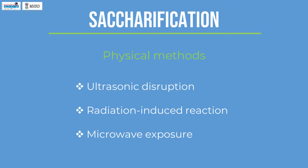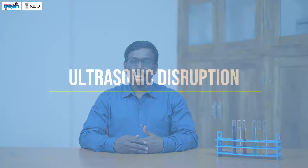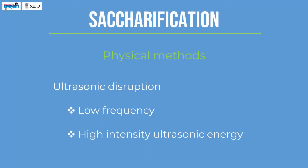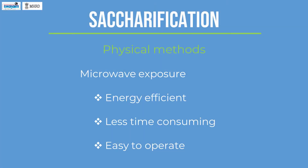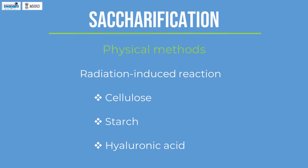Ultrasonic disruption, radiation-induced reaction, and microwave exposure are the common physical methods. Ultrasonic disruption involves the usage of low frequency and high intensity ultrasonic energy, which breaks the chemical bonds of polysaccharides by increasing the vibratory energy of material particles to generate smaller fragments with low molecular weight. Microwave exposure: polysaccharide placed in a microwave oven is degraded by electromagnetic radiation. This method is more energy efficient, less time consuming, and easy to operate. Radiation-induced treatment: radiation like gamma rays can be used to cleave polysaccharides into smaller fragments. Various polysaccharides including cellulose, starch, and hyaluronic acid can be degraded using this method.